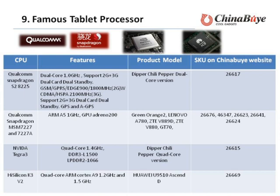Other processors include Qualcomm Snapdragon S2, the NI-W3, T-GRA3, and HiSilicon K3V2. Among them, the NI-W3 and HiSilicon K3V2 are quad-core processors. In ChinaBuy, there are currently two products using the quad-core processor, including the Deepoon Chaney Paper Scott Core and Huawei U9510.